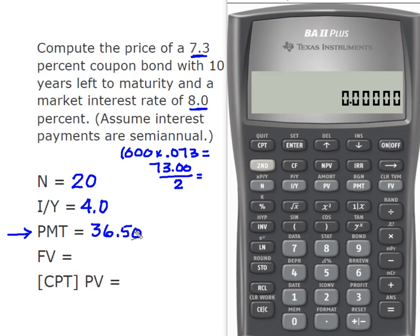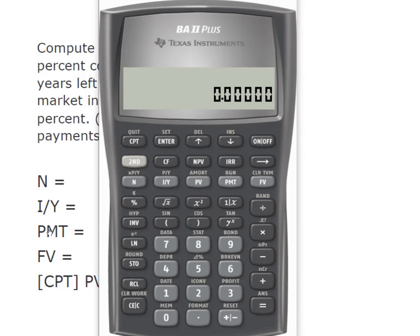We know that the par value or future value is going to be $1,000, and then we're going to compute present value. So we said our N was 20, our I/Y interest rate was 4, the payment was $36.50. I know that my future value is $1,000 and now I'm going to compute present value.